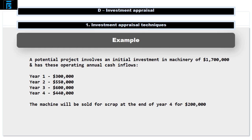Let me remind you about the example we looked at in the previous video. A potential project involves an initial investment in machinery of $1.7 million and has these operating annual cash inflows: Year 1, $300,000; Year 2, $550,000; Year 3, $600,000; Year 4, $440,000. The machinery will be sold for scrap at the end of Year 4 for $200,000.